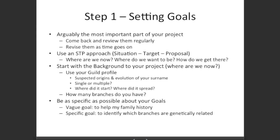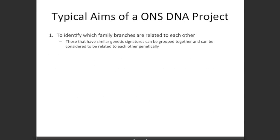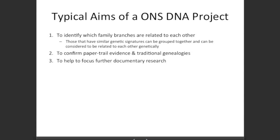A piece of advice: be as specific as possible about your goals. A vague goal would be 'to help my family history.' A more specific goal would be 'to identify which branches are genetically related to each other.' Typical goals of a one-name study include identifying which family branches are related — those with similar genetic signatures can be grouped together and considered genetically related. A second goal would be to confirm paper trail evidence and traditional genealogies, and a third would be to help focus further documentary research, since if you know two family branches are related, they should be collaborating to find where they join up.